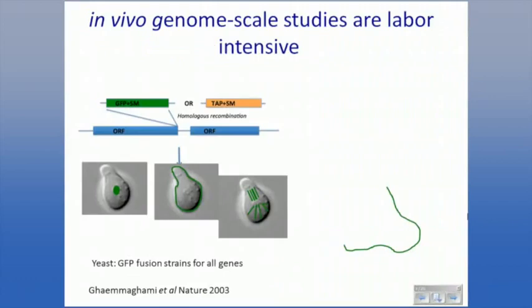In vivo studies are labor-intensive, so they've actually been applied at genome scale — for example, from Aaron O'Shea and Jonathan Weissman's lab, tagging every single gene in yeast with a GFP fusion in the early 2000s. From a collection of 6,000 yeast strains, you can see proteins localizing to the nucleus, membrane, or spindle. But that's very labor-intensive — you have thousands of separate plates to track each of these 6,000 different strains, and you have to take at least 6,000 different pictures. So that's a lot of work.